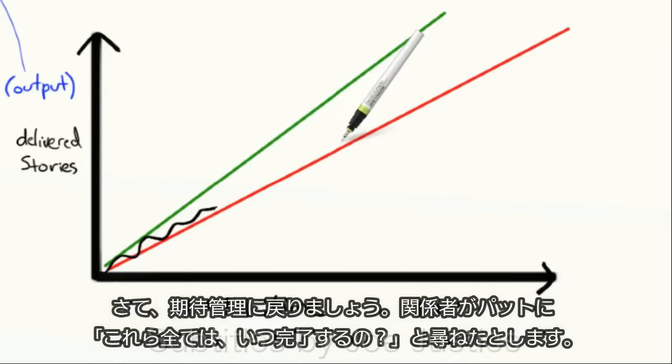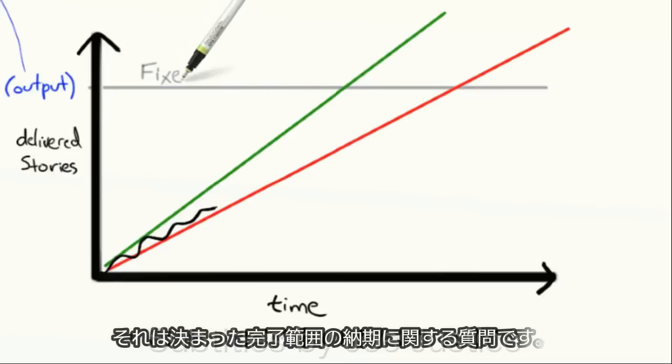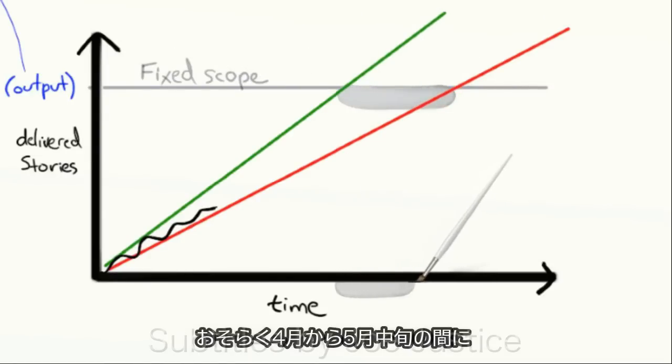Okay, so back to expectations management. Suppose the stakeholders ask Pat, when will all of this stuff be done? When will we be here? That's a fixed scope, variable time question. So Pat uses the two trend lines to answer. Most likely sometime between April and mid-May.